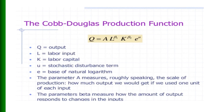The Cobb-Douglas production function can be written as Q = A × L^β₁ × K^β₂ × eᵘ, where Q is output, L is labor, K is capital, u is the stochastic disturbance term, e is the base of the natural logarithm, the parameter A is the scale of production showing total factor productivity or the efficiency parameter, and beta₁ and beta₂ measure how output responds to changes in the labor and capital inputs.